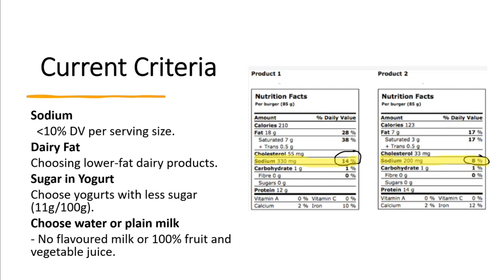For dairy foods, we're looking for cheeses with less than or equal to 20% milk fat when possible — this can be difficult to find in our region, so the guideline says 'when possible.' For fluid milk, fat-free milk should not be offered, so we're looking for 1% or higher. There's also criteria about sugar in yogurt — no more than 11 grams per 100-gram serving, which aligns with Health Canada's recommendations to reduce intake of foods high in added sugar.